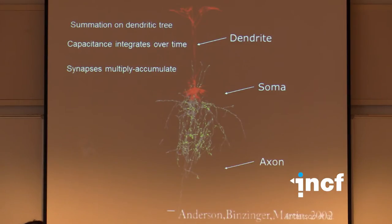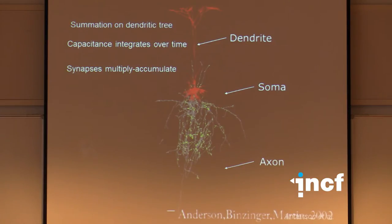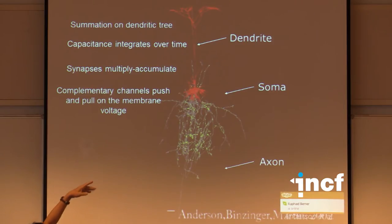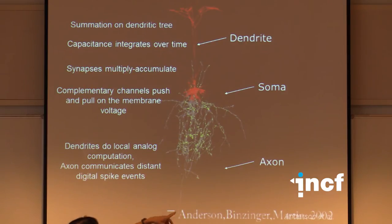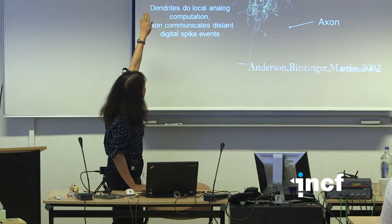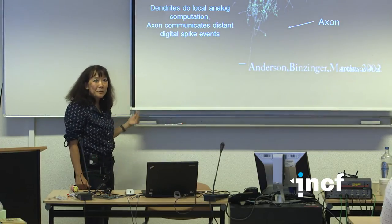Synapses perform multiply-accumulate: each incoming spike is multiplied by a weight, and those values are accumulated. The synapse also has complementary channels that push and pull on the membrane voltage at the soma. Dendrites do local analog computation, and the axon communicates digital spikes over long distances to other neurons. These properties can also be implemented in electronics.